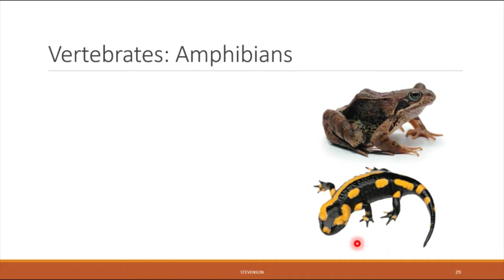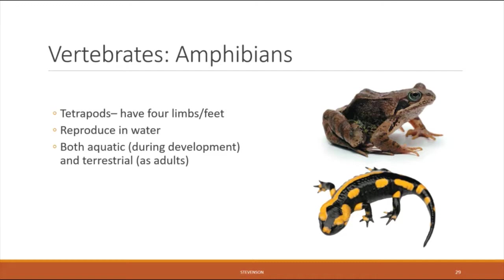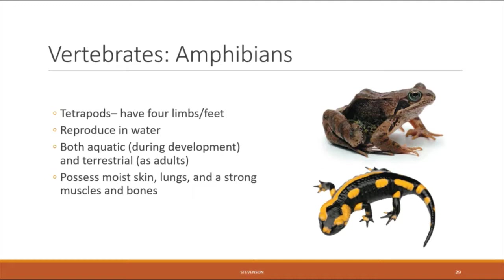The next group is the amphibians, the first vertebrates considered tetrapods — meaning four-limbed, from 'tetra' (four) and 'pod' (feet). Amphibians reproduce in water, laying their eggs there, but as adults can be terrestrial. They are known for having moist skin, proper lungs (which sets them apart from fish), and strong muscles and bones for life on land. Examples include frogs, toads, and salamanders.